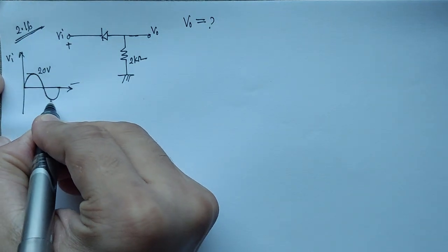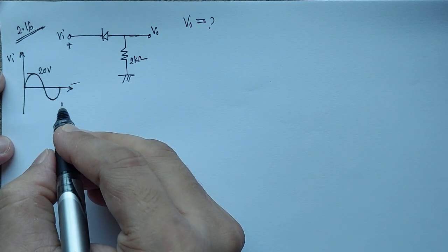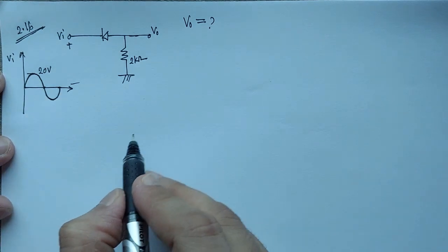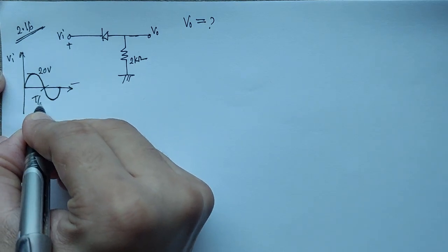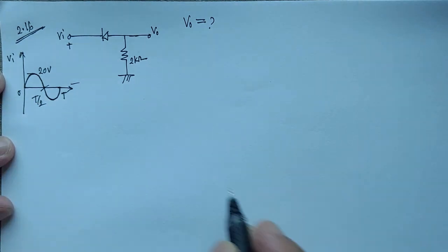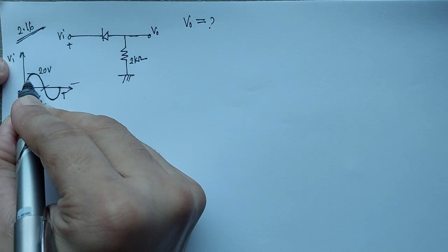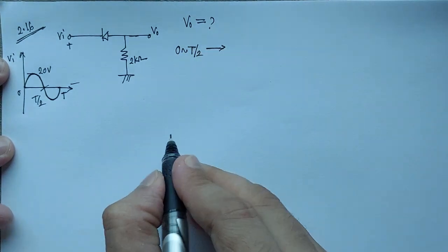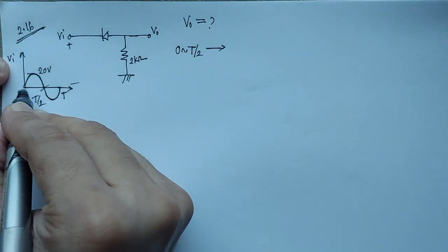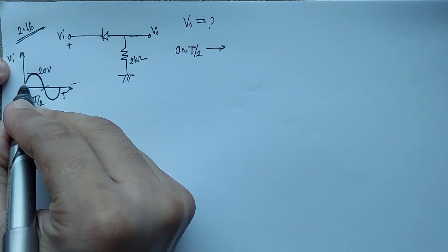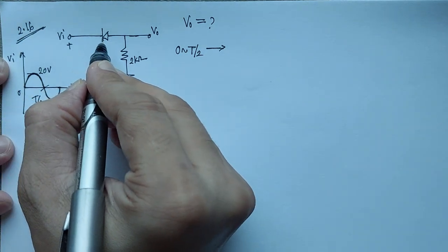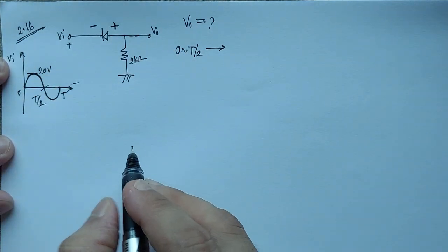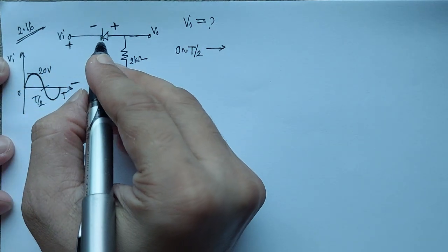From the circuit we have to analyze the characteristics of the diode for the first half cycle and also for the second half cycle. For the first half cycle, from 0 to T/2, when positive input voltage is given, the diode will be off because the polarity of the diode is negative at one end and positive at this point. So for the positive input signal, the diode will be off.